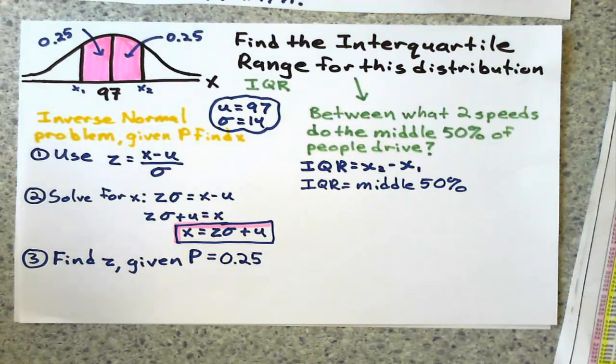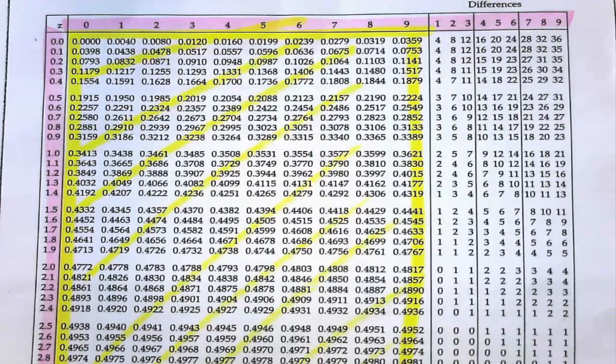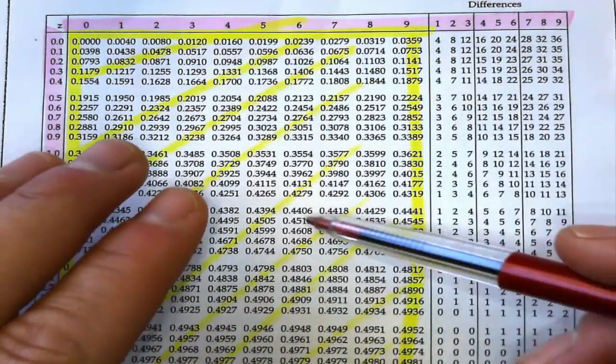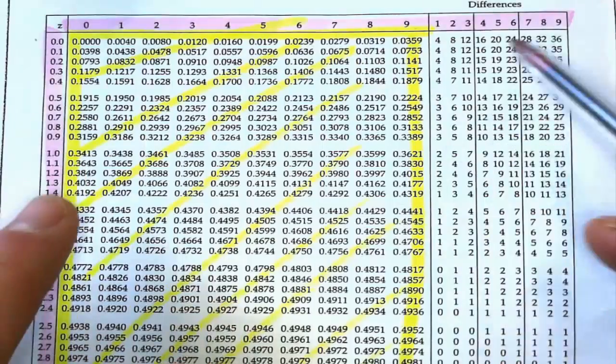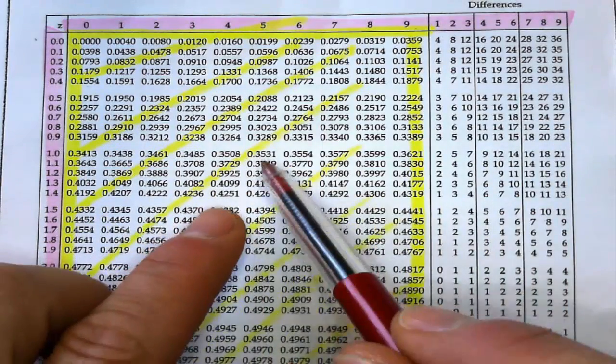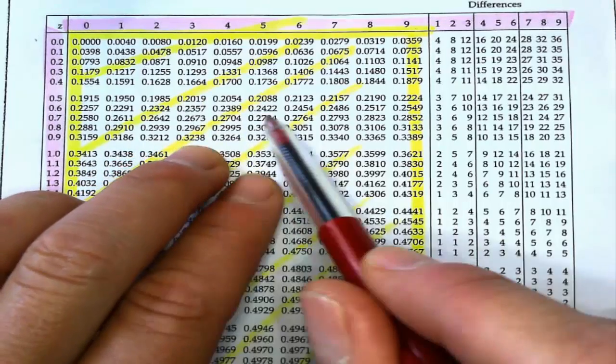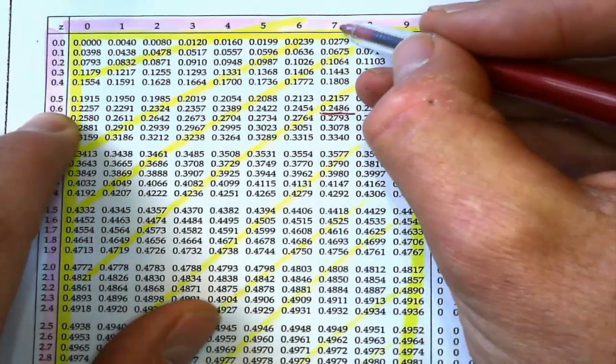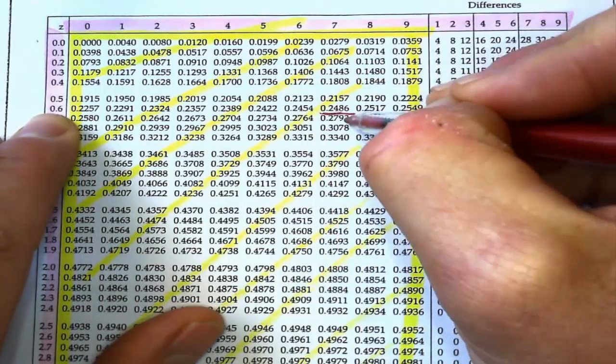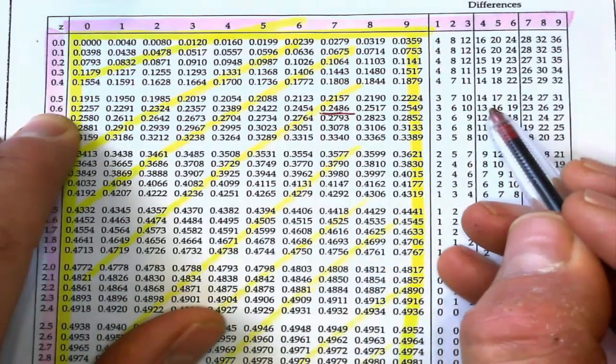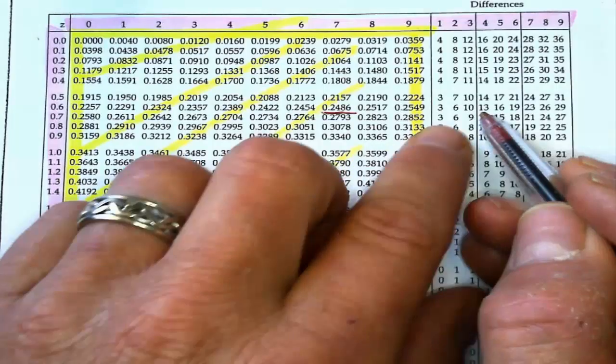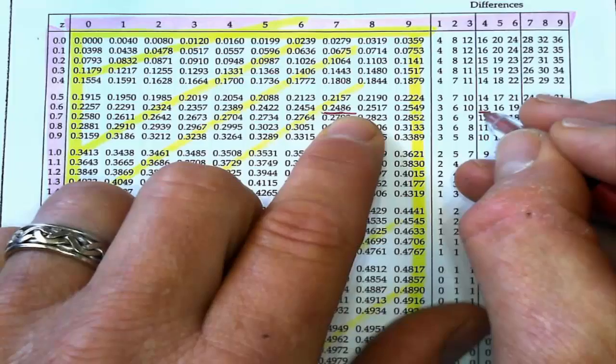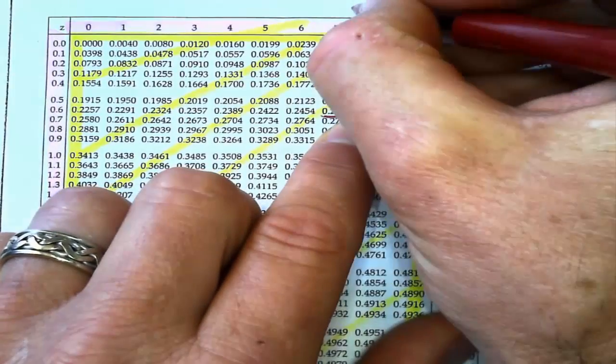Here's a close-up of the Z table. The part in yellow are all the probabilities, the part in pink are the Z values. I'm going to look up where's the closest I can find 0.25. It gets close here, so this value is 0.67, but it's not close enough. Over here in this difference column, if I have 13 more to those last decimal places, I'll get 0.2499, and that's pretty close, as close as I can get.